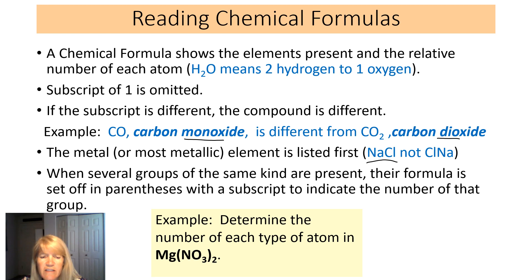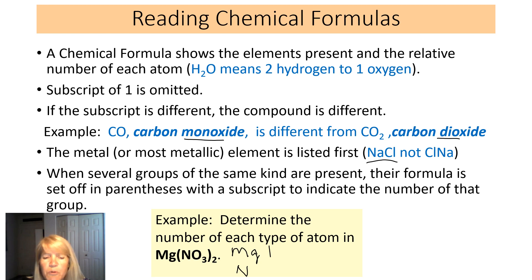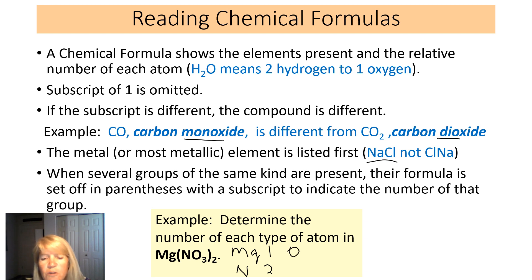Let's look at Mg(NO₃)₂ and count how many of each atom. Magnesium — there's just one. The 2 outside the parentheses applies to everything inside: there are two nitrogens, and since there are three oxygens in each group and two groups, we have six oxygens total.